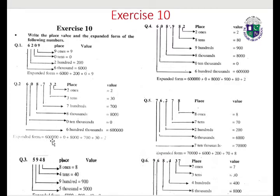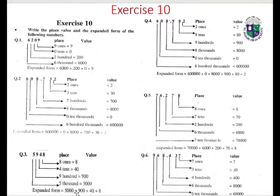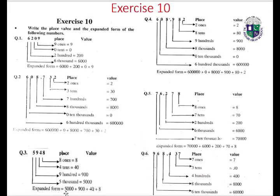6,100,000. 6,050,730. 6,050,000 plus 100,000 plus 800 plus 8,000. 800,000 plus 30 plus 2. 5,948 — expanded form of 5,948.